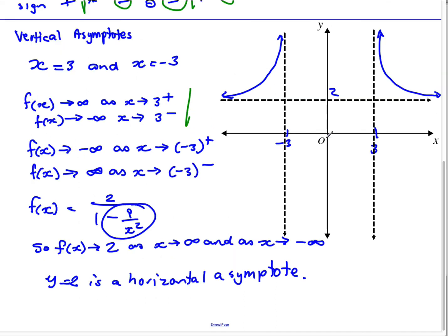So as we approach negative 3 from the positive direction, the sign is negative. So we're down here. We're going to get a parabola-like shape in here. And we also know that we have symmetry about the y-axis. So down the y-axis, we can see that we have symmetry across.